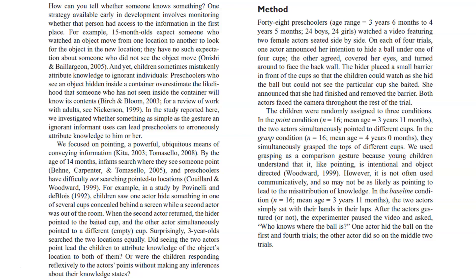Because of this disconnect — where young infants do understand that some people don't know what they know, but preschoolers get confused and think everyone knows the same things — 'in the study reported here, we investigated whether something as simple as the gesture an ignorant informant uses can lead preschoolers to erroneously attribute knowledge to him or her.' They're testing whether simply pointing at something, even if you don't know about it, can confuse preschoolers and lead them to wrongfully think you know what you're pointing about.